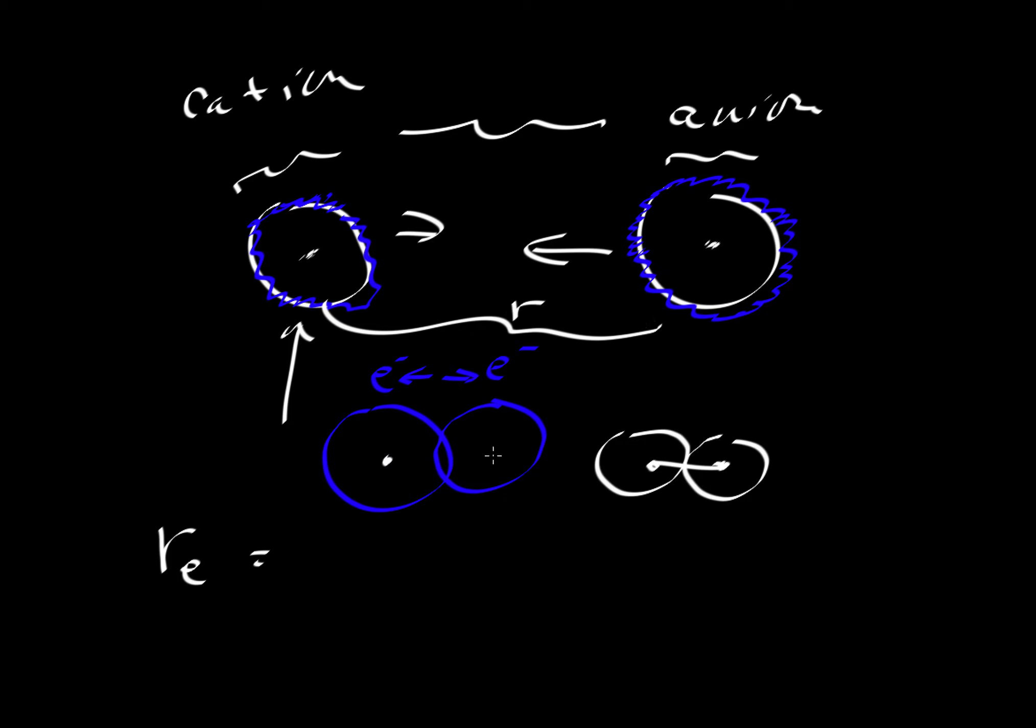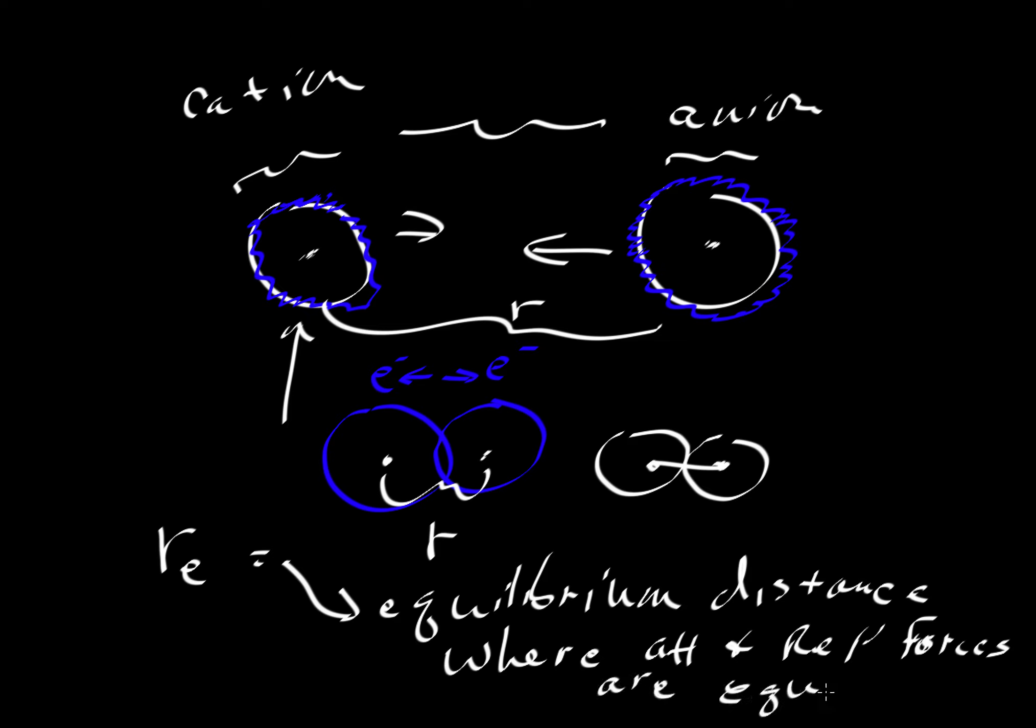So this total distance is r. And then we could draw another value, a different r at some other value. r_e would be the equilibrium distance where the forces are balanced. So this is the equilibrium distance where the attractive and repulsive forces are equal to one another. So they are balanced.